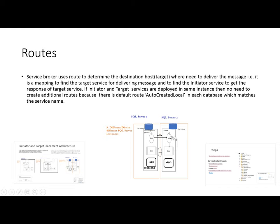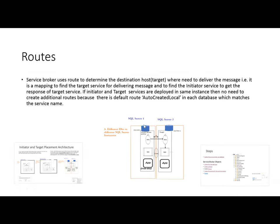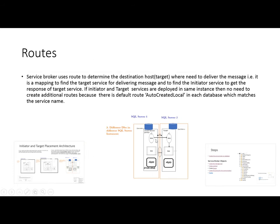In the same way, when the target wants to respond back, it will also find from the routes the address of the initiator. If our services are hosted on the same instance, in the same SQL Server, within the same database or different databases, there is no need to define an additional route. There is a default route which can be used to map the address of the required service. But if the services are hosted on different servers, then we need to define the routes.